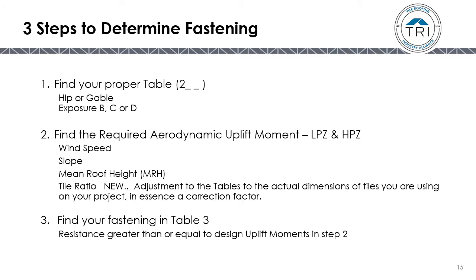There are three steps to determine fastening. Step one is to find your uplift moment table — you'll need to know if it's a hip or gable roof and the exposure (B, C, or D). Step two is to find the design uplift moment for both the low-pressure zone and the high-pressure zone, requiring wind speed, slope, mean roof height, and tile ratio — a correction factor based on the actual tile dimensions. Step three is to find your fastening in Table 3, where you need a resistance greater than or equal to the design uplift moment from step two.